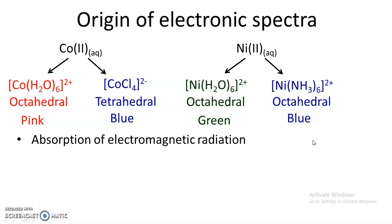The color of the complex is associated with the absorption of electromagnetic radiation in the visible region, and the color is related to the energy gap between the two levels, that is the t2g and eg levels. There are 5 d-orbitals in the metal ion, and these split into two levels: t2g and eg. This energy gap depends upon the geometry of the complex — octahedral, tetrahedral, or square planar — and also upon the number and nature of ligands, whether they are weak-field or strong-field ligands.